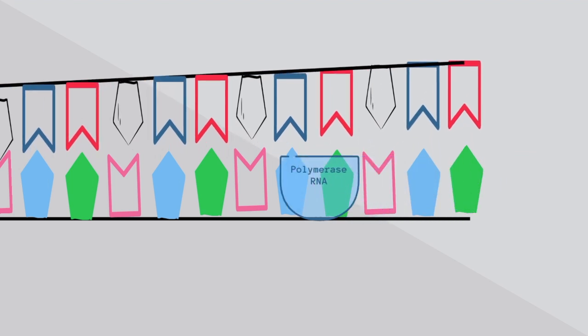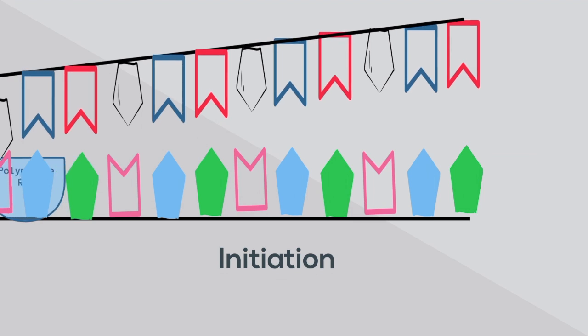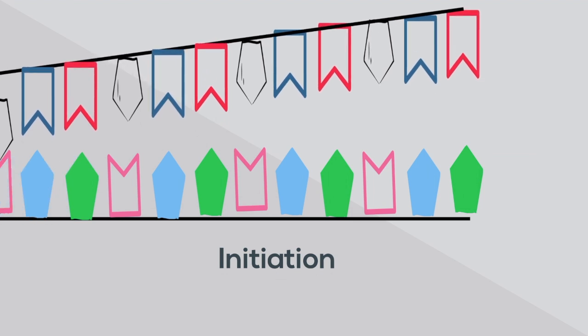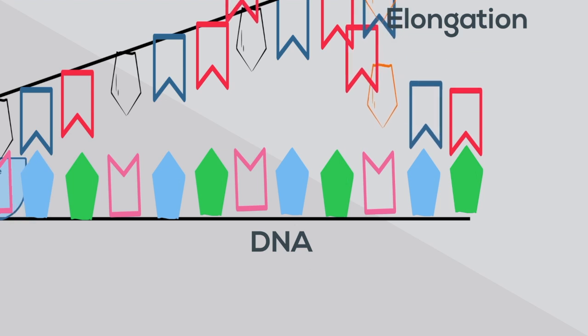As the RNA polymerase moves along the unzipped DNA, bases of RNA attach to the DNA. This stage is called elongation.